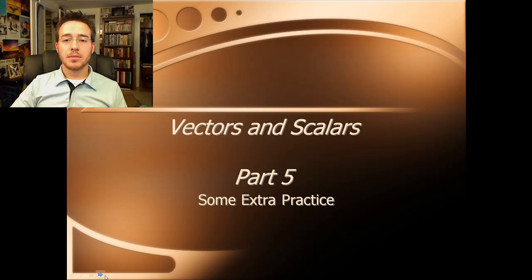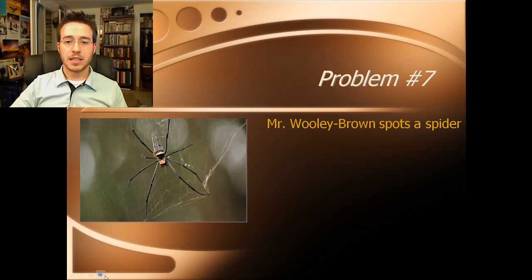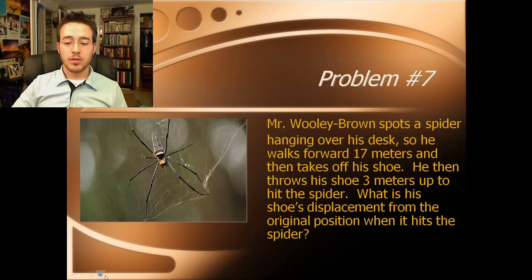Okay, so one of our last problems here is going to be the spider problem. So let's go ahead and take a look at it. Mr. Willie Brown spots a spider hanging over his desk. So he walks forward 17 meters and then takes off his shoe. He then throws his shoe 3 meters up to hit the spider. What is his shoe's displacement from the original position when it hits the spider? So in this problem I'm asking you for both the distance from the original starting point and the angle up from the horizontal. Okay, so go ahead and do this on your own, pause the video, and then when you restart it we'll go over my solution.